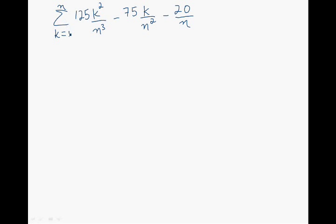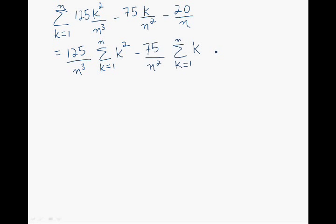The next step is to simplify this expression. For the first term, the 125 and the n cubed come out front. In the second term, the minus 75 and the n squared also come out front. And in the third term, the minus 20 over n comes out front.